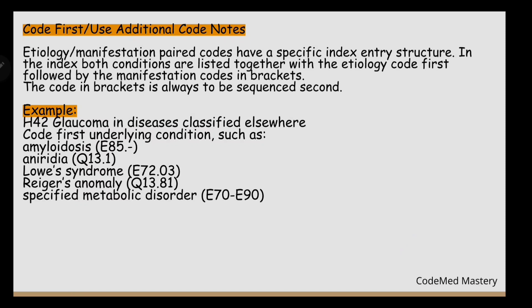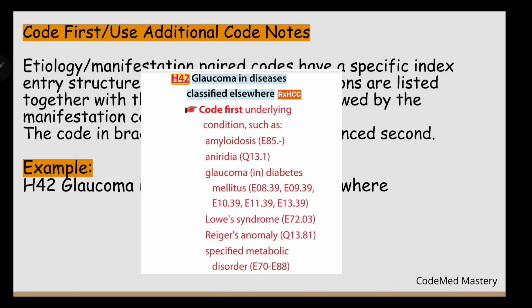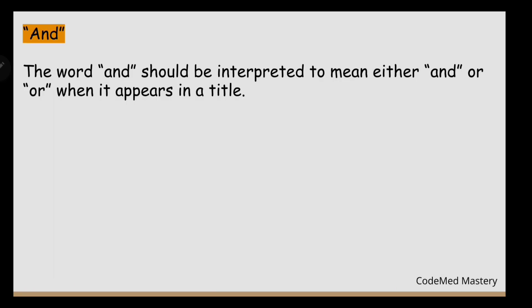Next are Code First and Use Additional Code notes. In medical coding, etiology is the underlying disease or cause, and manifestation is the relevant condition caused by that disease. Etiology codes are listed first, followed by manifestation codes. Codes in brackets in the Alphabetic Index identify manifestation codes and are always sequenced second. For example, for code H42 (Glaucoma in Diseases Classified Elsewhere), the 'Code First' note instructs that the underlying condition must be listed first. The term 'and' in a narrative statement represents 'and/or.'